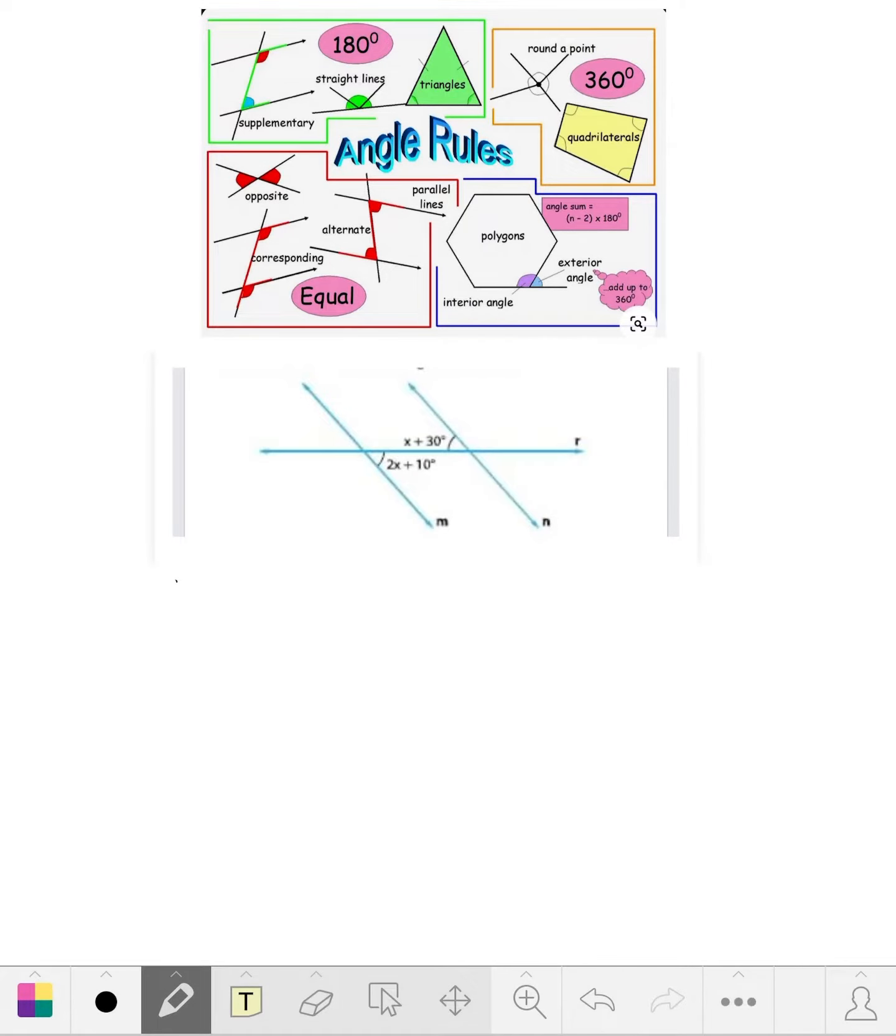Hello class, Mr. Stone here. The problem we have today involves two angles we need to solve: one is x plus 30 and the other is 2x plus 10. Above, I put a picture showing the different angle rules. This falls under the alternate angles rule, so we know each one of these is equal to each other. Our real problem now is to solve for x. We have x plus 30...